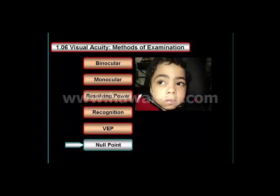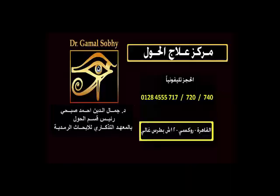In cases of null point nystagmus, vision improves when the patient assumes a compensatory head posture that places the eyes into a gaze position in which the nystagmus is reduced or absent.